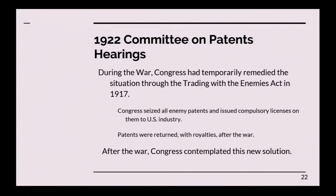During the war, Congress also passed a compulsory licensing statute in the Trading with the Enemies Act, under which the U.S. seized all enemy property — basically German property — including patents, and issued compulsory licenses on them to U.S. industry. After the war, they returned the patent rights along with the royalties to the patent holders.